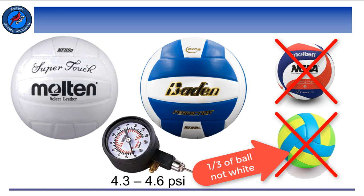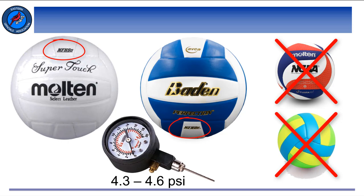Of course, we check the ball is inflated to 4.3 to 4.6 pounds per square inch of air pressure. And finally, we make sure that the volleyball includes a National Federation of High School authenticating mark.